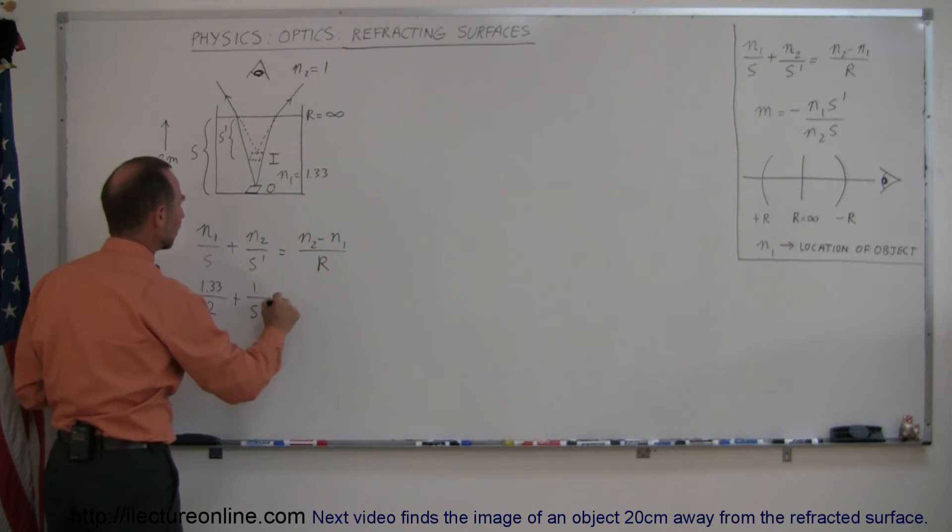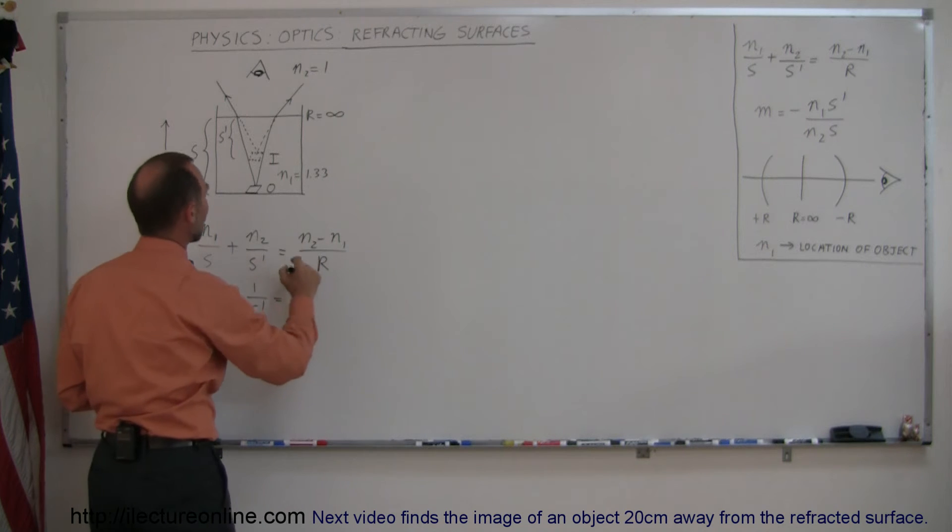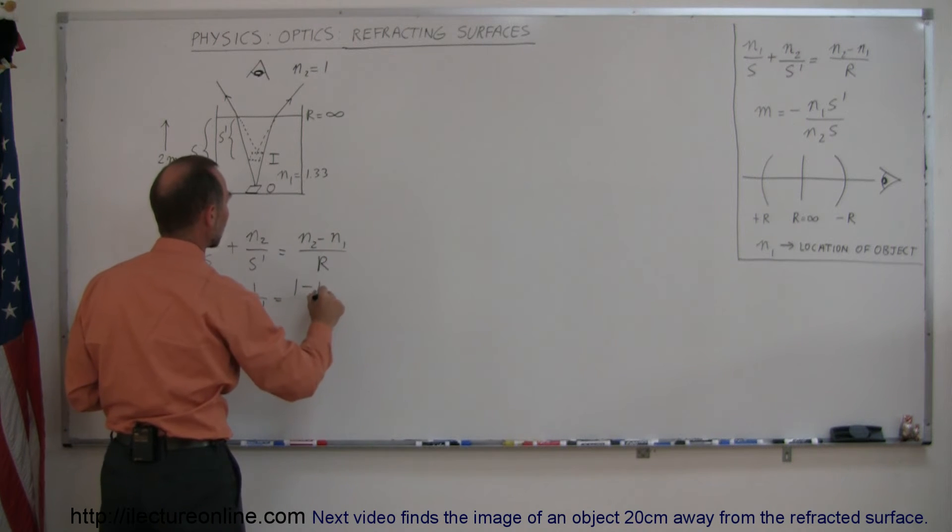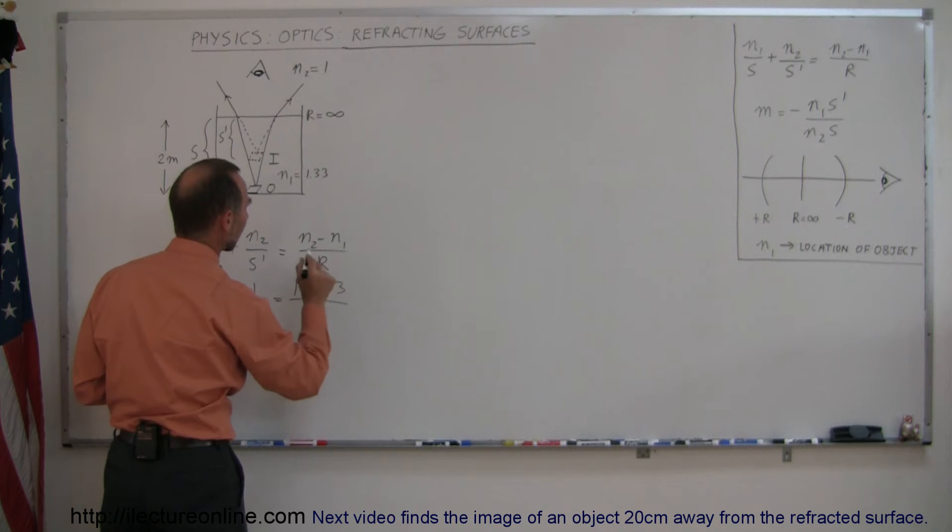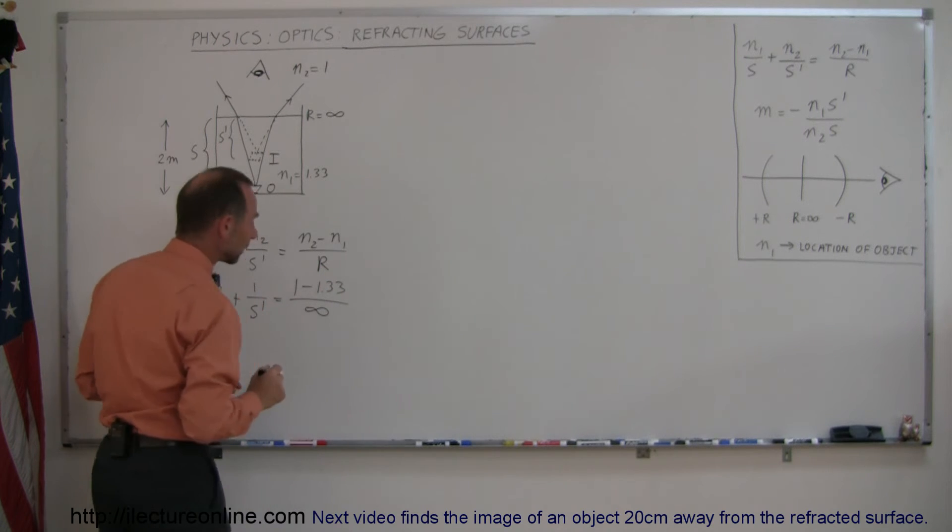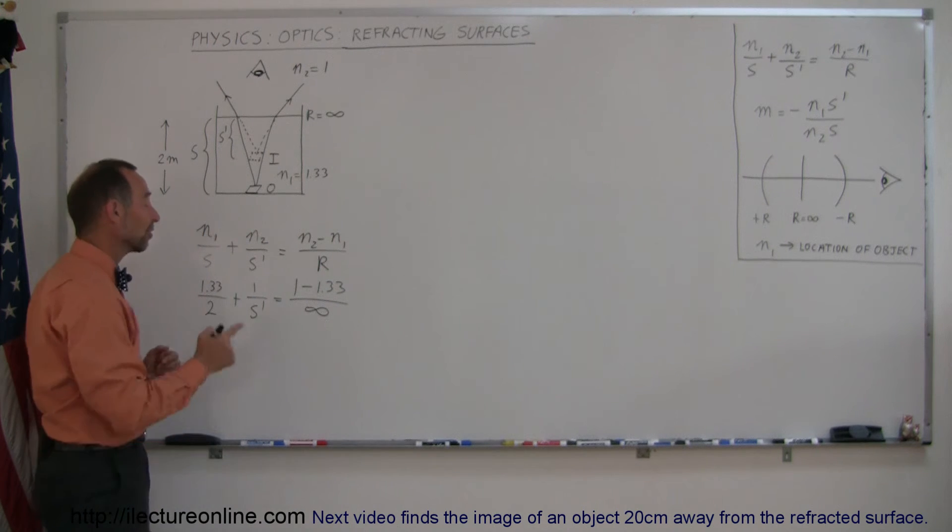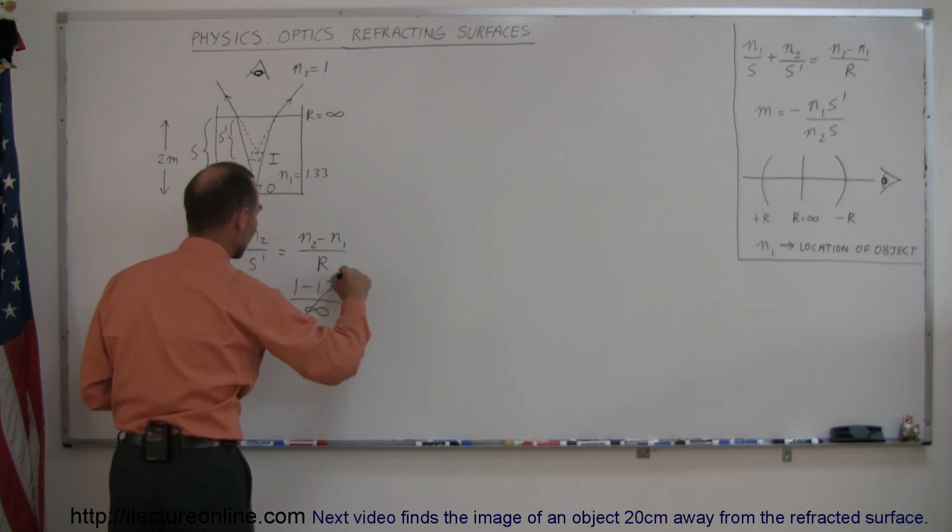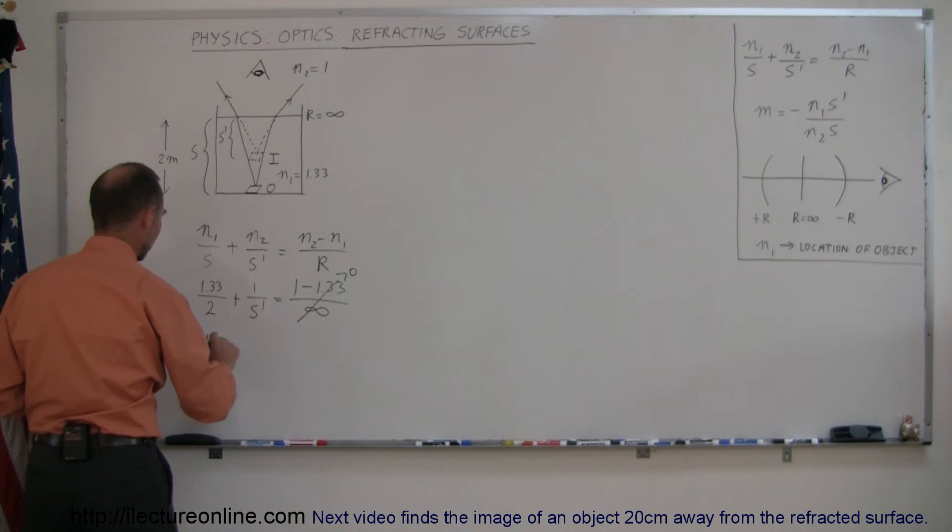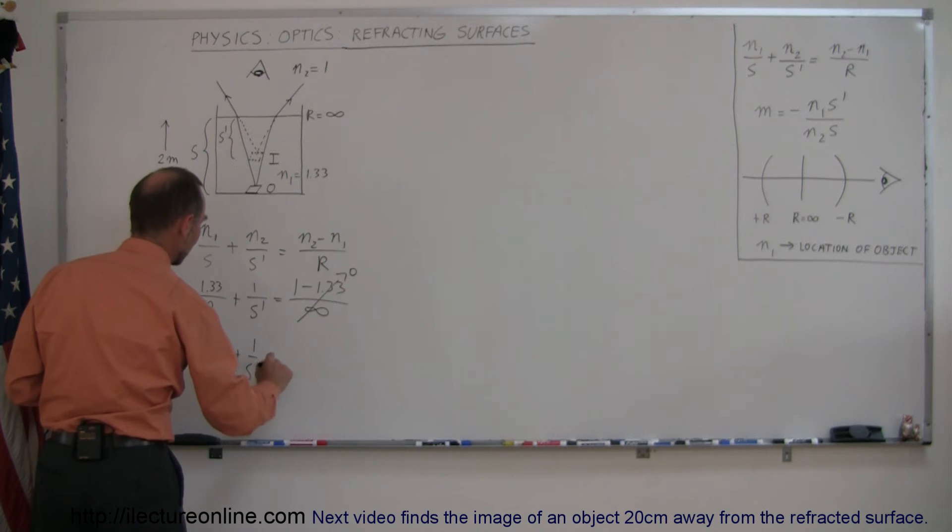This equals N2, which is 1, minus N1, which is 1.33, divided by R, which is infinite. That makes the problem easier because anything divided by infinity is 0, so we can write this as 1.33 divided by 2 plus 1 over S prime equals 0.